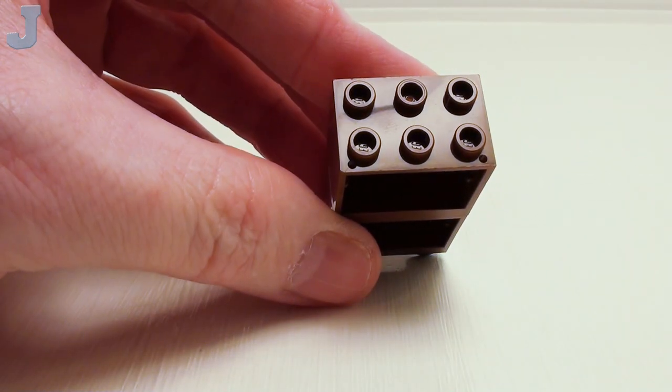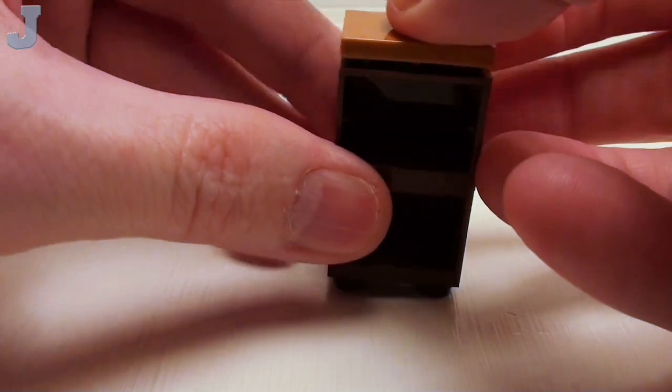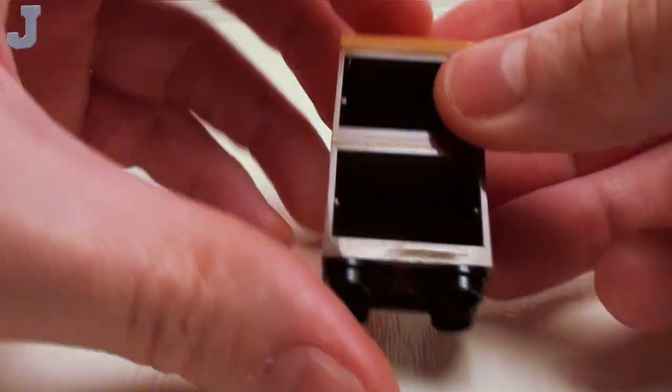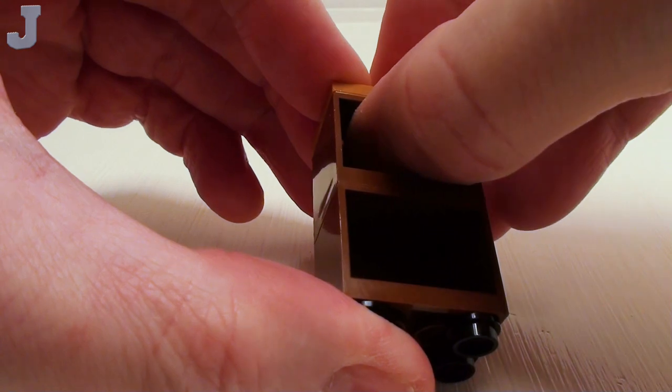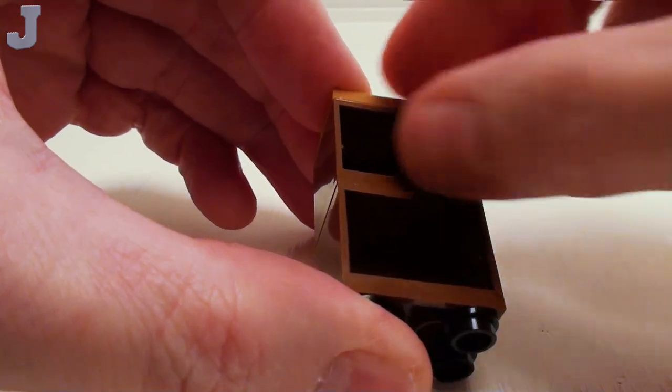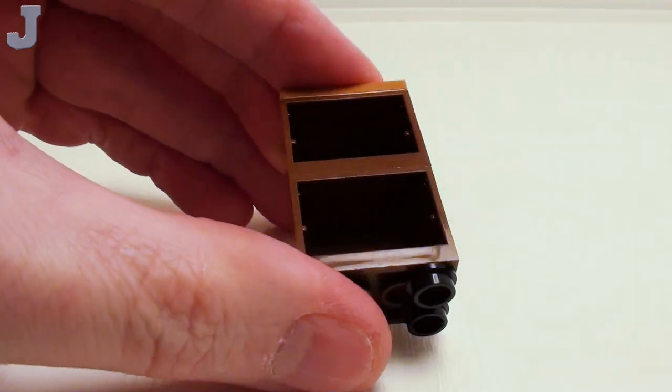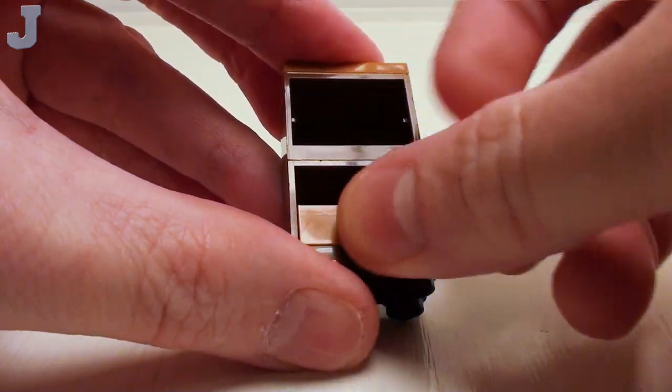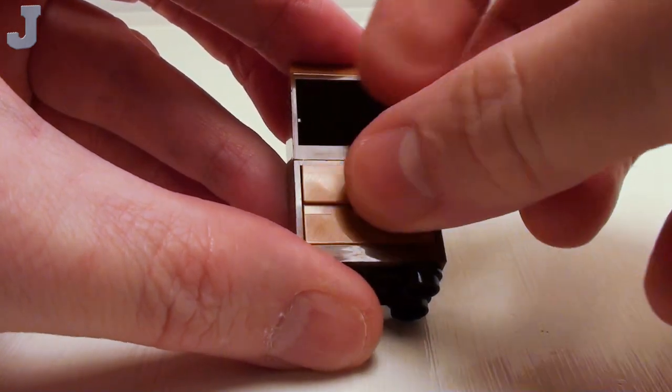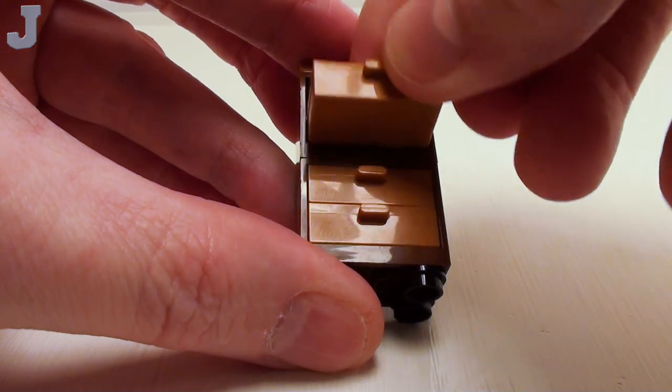And on the top of the container, a 2x3 flat tile. I want to make sure that this is really locked into the top portion. That's why I left the drawers out. Now we can safely put our drawers in. So we're going to need four medium nougat drawers. Slide those in place.